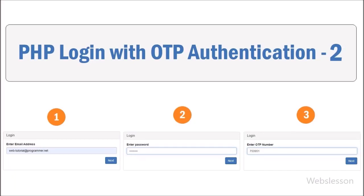Hello friends, this is the second part of user login using OTP method authentication in PHP script. In this part we will write AJAX jQuery script for sending form data to the PHP script, and in the PHP script first we will verify the user email address details.